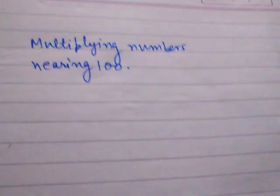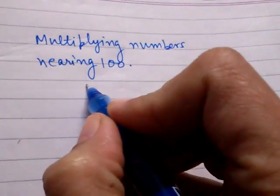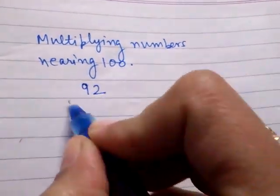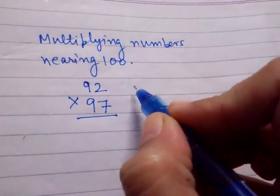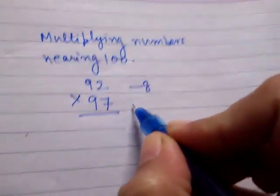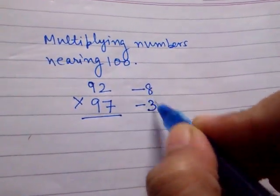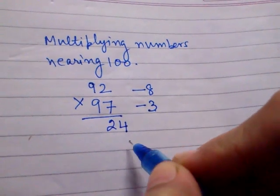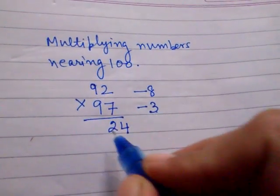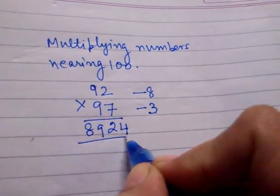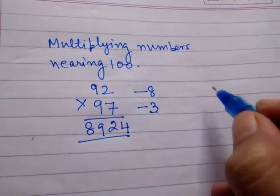Let us understand a shortcut technique to multiply numbers nearing 100. For example, multiply 92 by 97. 92 is 8 short from 100 and 97 is 3 short from 100. We multiply these two and get the last two digits of the answer. 92 minus 3 is 89, so the answer is 8924.